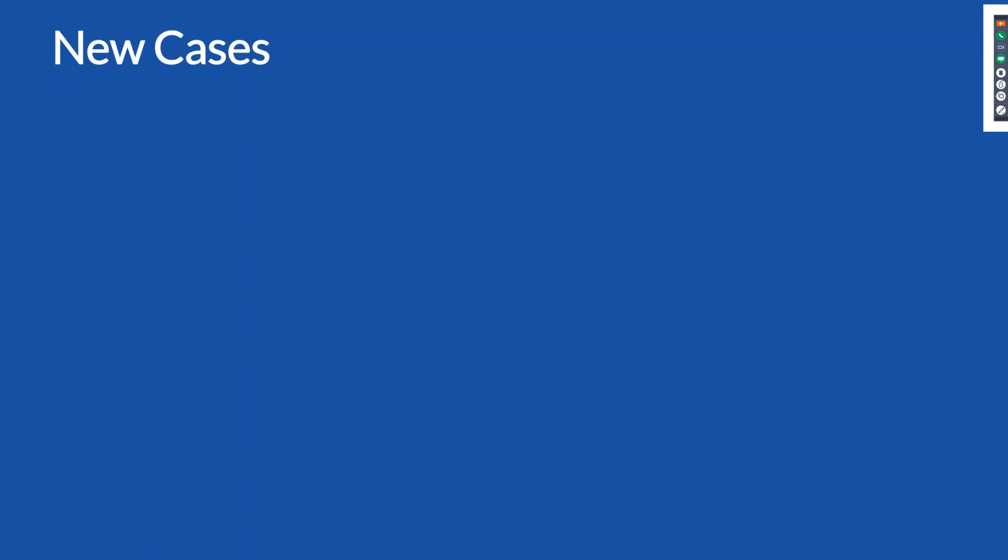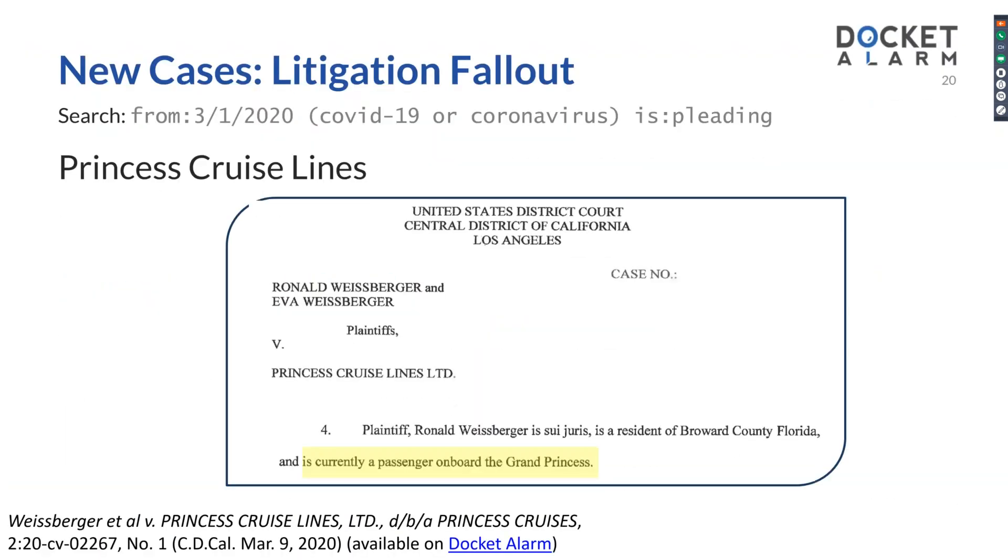Now let's discuss new cases — what new cases are going to be filed as a result of COVID-19. I want to go over some interesting cases that are a direct result of the litigation fallout, but also briefly touch on procedural issues arising from COVID-19. There are cases that were going to be filed shortly regardless, but now the attorneys involved have to jump through additional hoops because the court is closed. How do you file a case if the court is closed? Or if you cannot reach your clients because of a travel ban or social distancing? How do you even get an affirmation from your client to attach to a complaint? There are quite a few procedural issues on filing new cases.